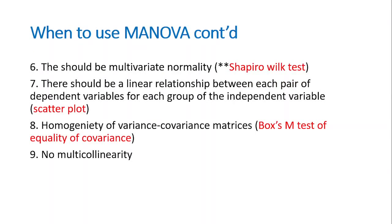There should be multivariate normality. The only way to check for this in SPSS is to use the Shapiro-Wilk test, though it is not the best way. The next assumption is that there should be a linear relationship between each pair of dependent variables for each group of the independent variable. There should be homogeneity of variance-covariance matrices, and there should be no multicollinearity.